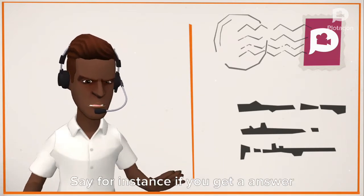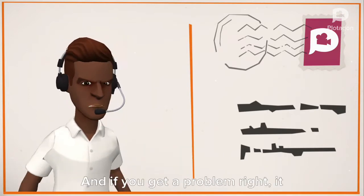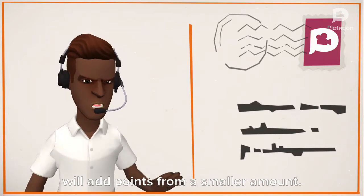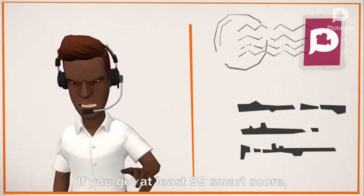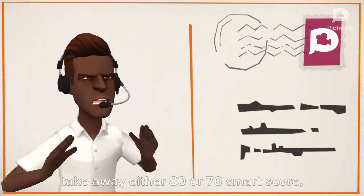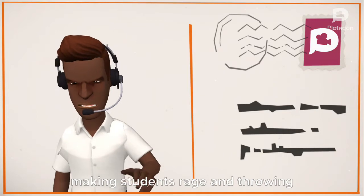Say for instance if you get an answer wrong, it will sometimes take away 10 points per answer. And if you get a problem right, it will add points from a smaller amount. If you get at least 99 smart score and then get an answer wrong, it will take away either 80 or 70 smart score, making students rage and throwing computers.